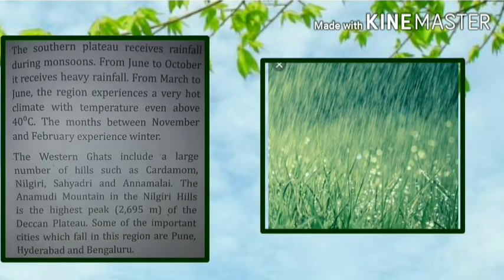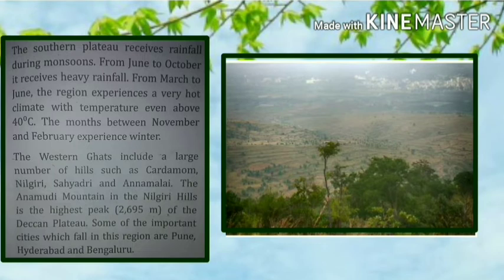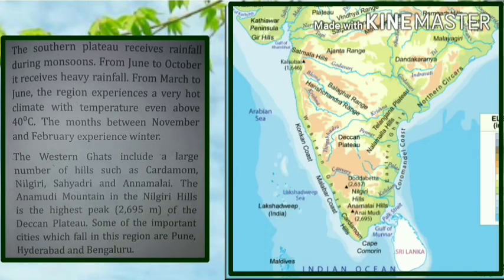The southern plateau receives rainfall during monsoons — from June to October it receives heavy rainfall. From March to June the region experiences a very hot climate with temperatures even above 40 degrees Celsius. The months between November and February experience winter.